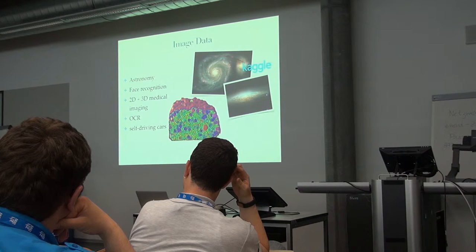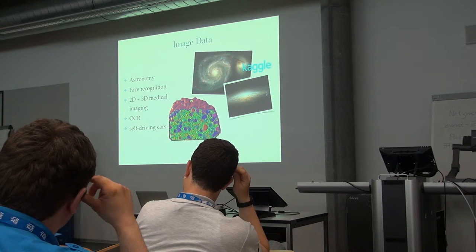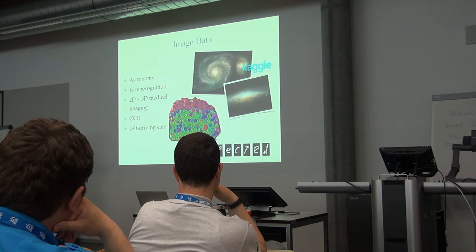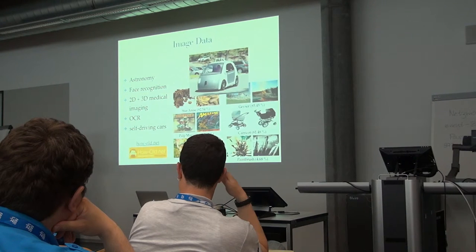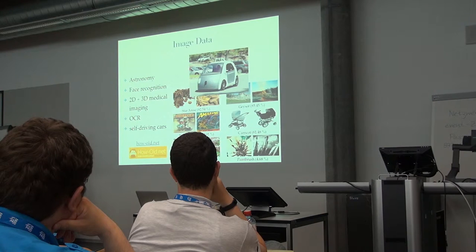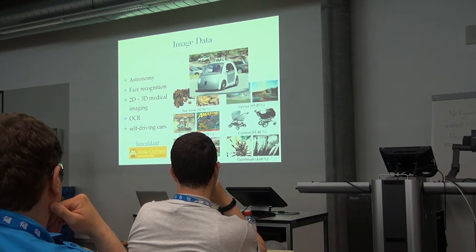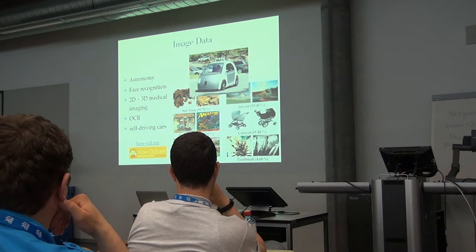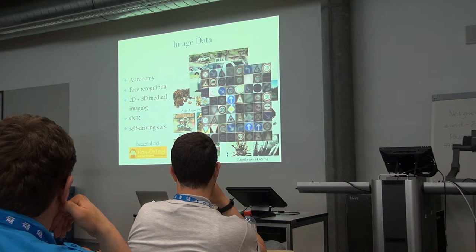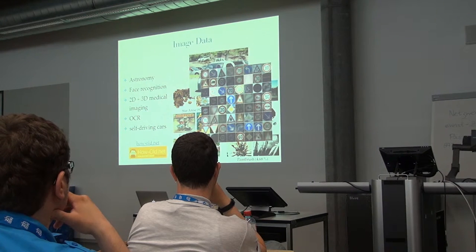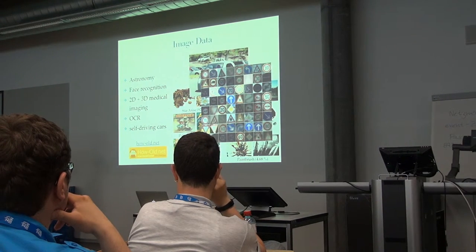Medical images are very important. Recognition of handwriting and self-driving cars are further applications. Self-driving cars need to do a lot of classification and regression: a regression task to determine distance to an individual on the street, and classification tasks like is this a stop sign or is somebody walking into the street? There's a lot of classification and regression going on in all these applications.